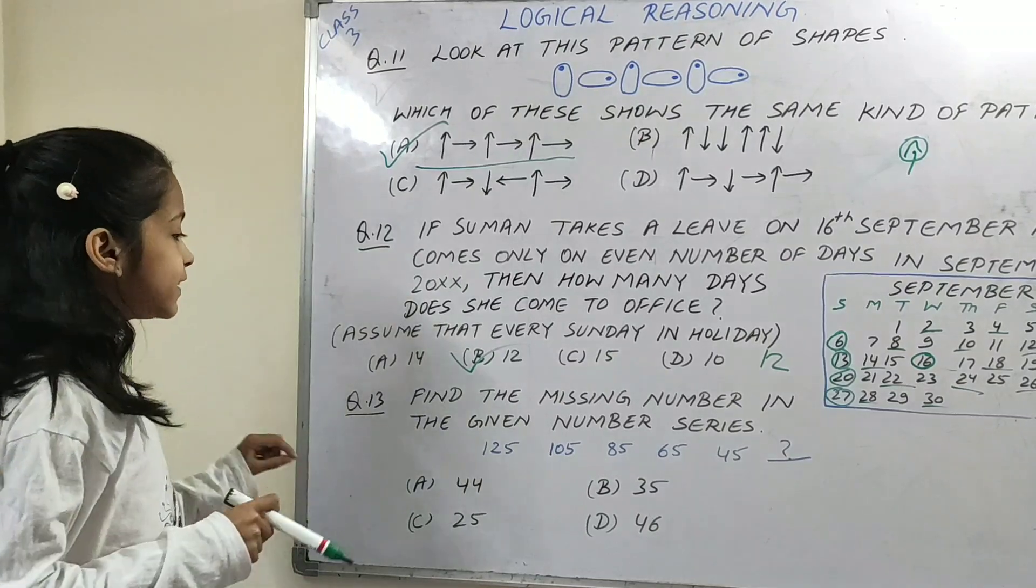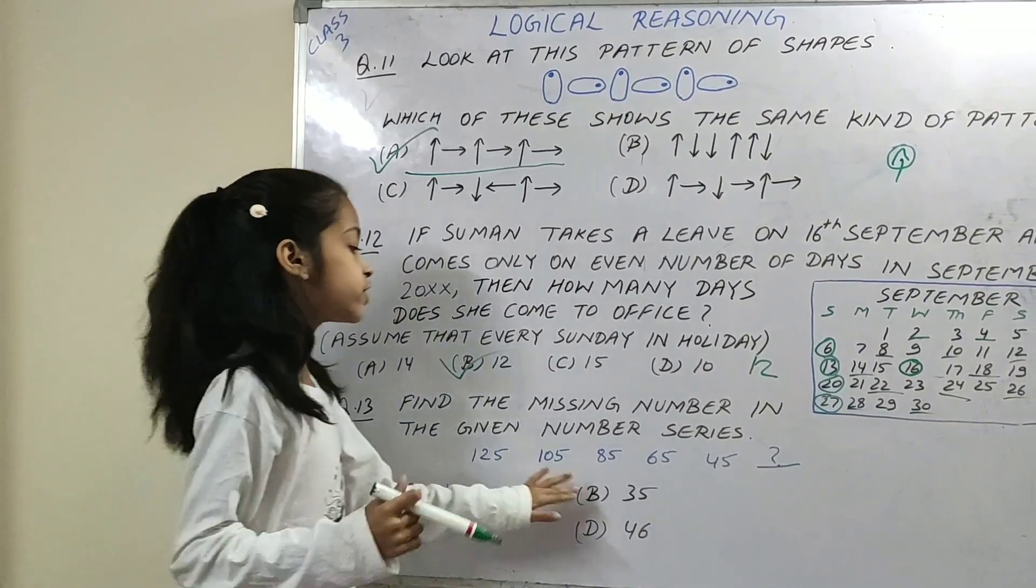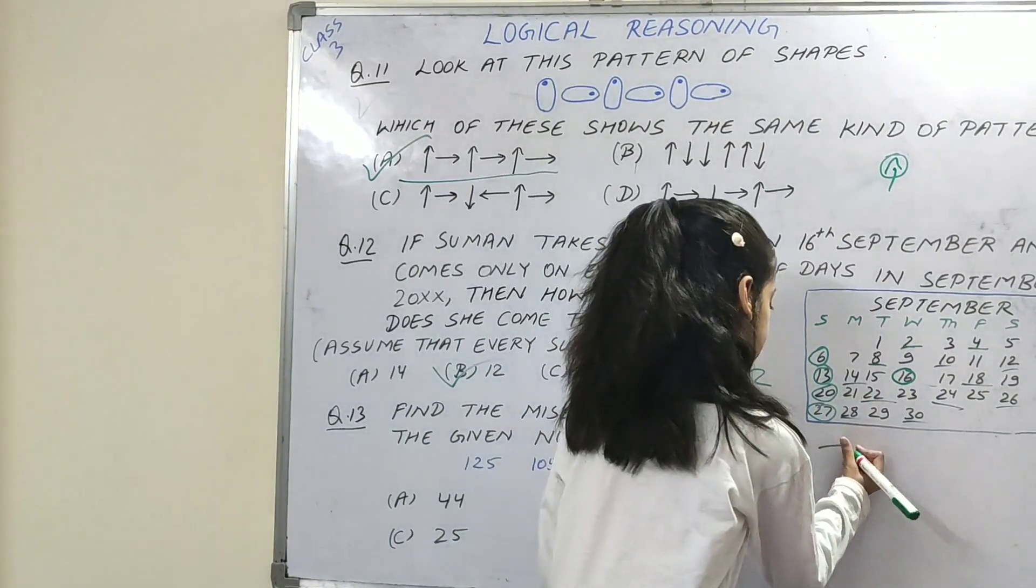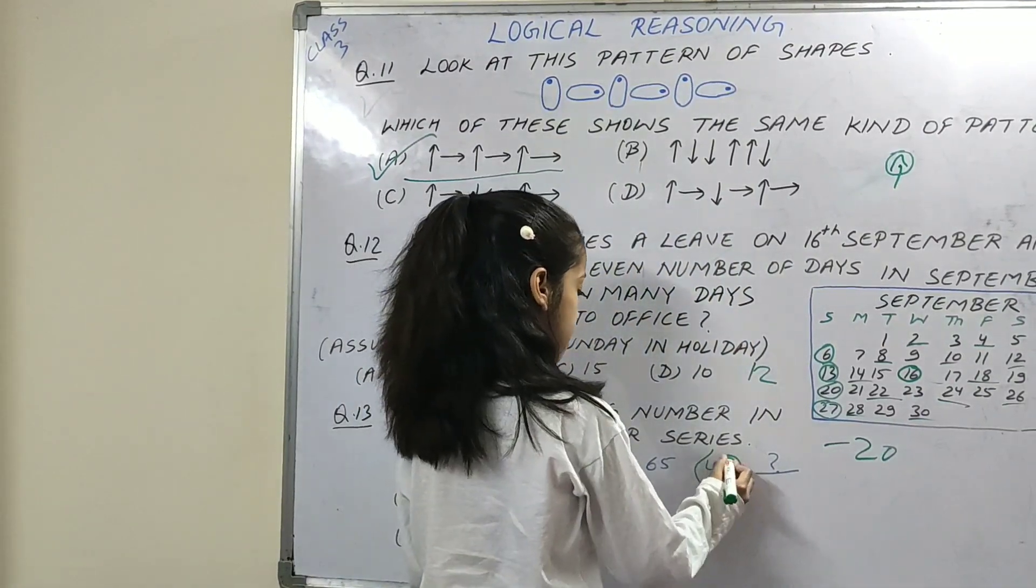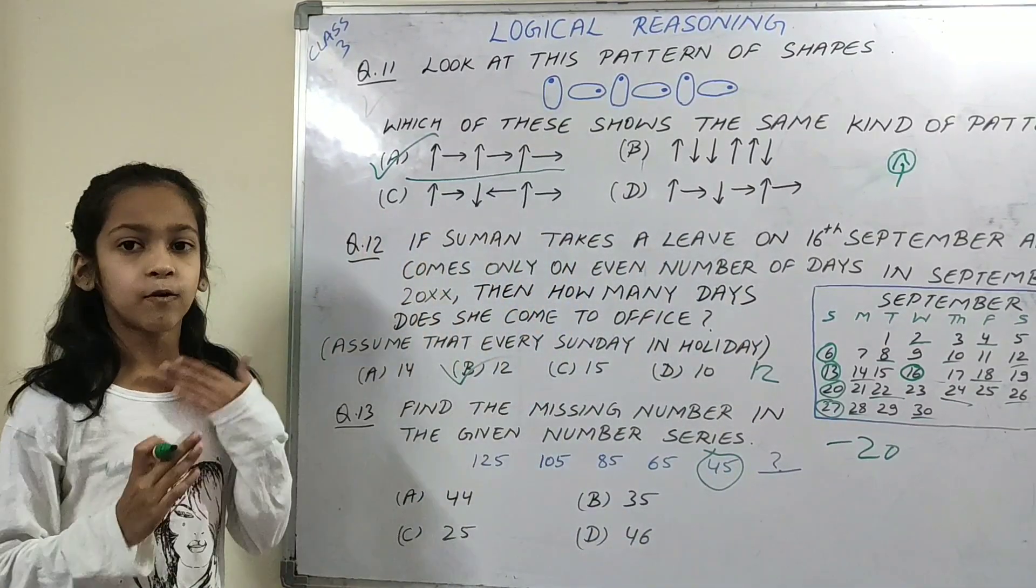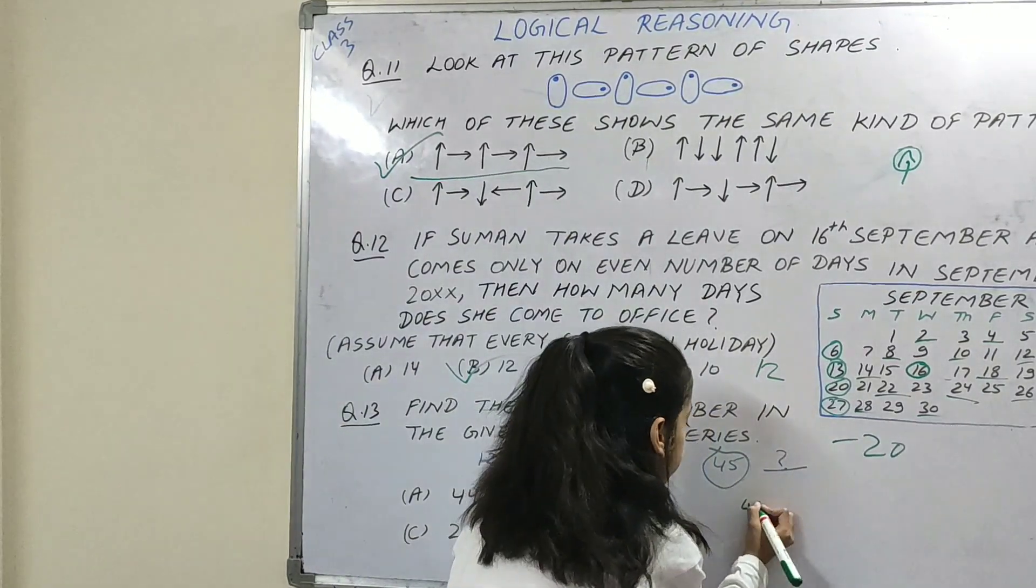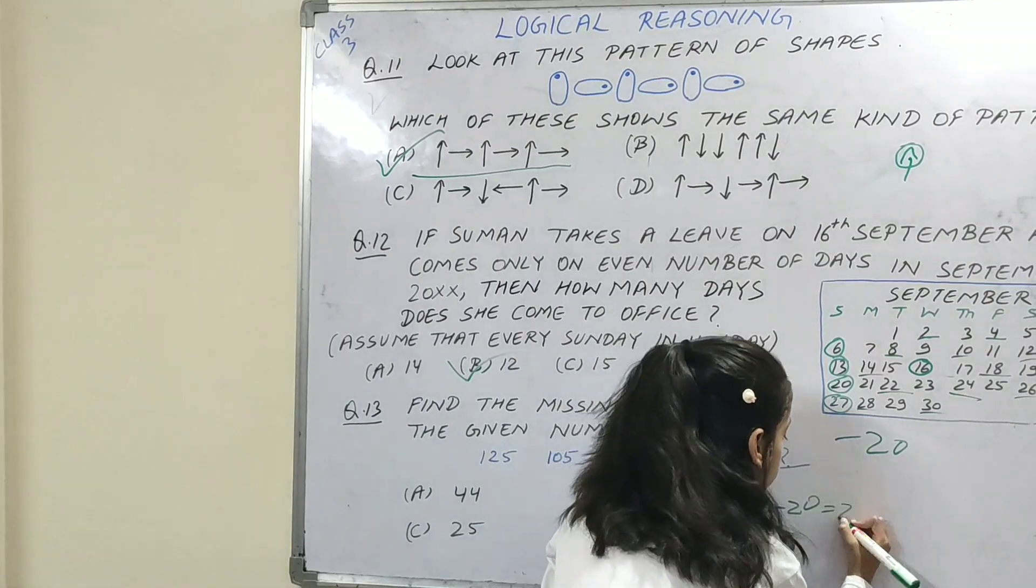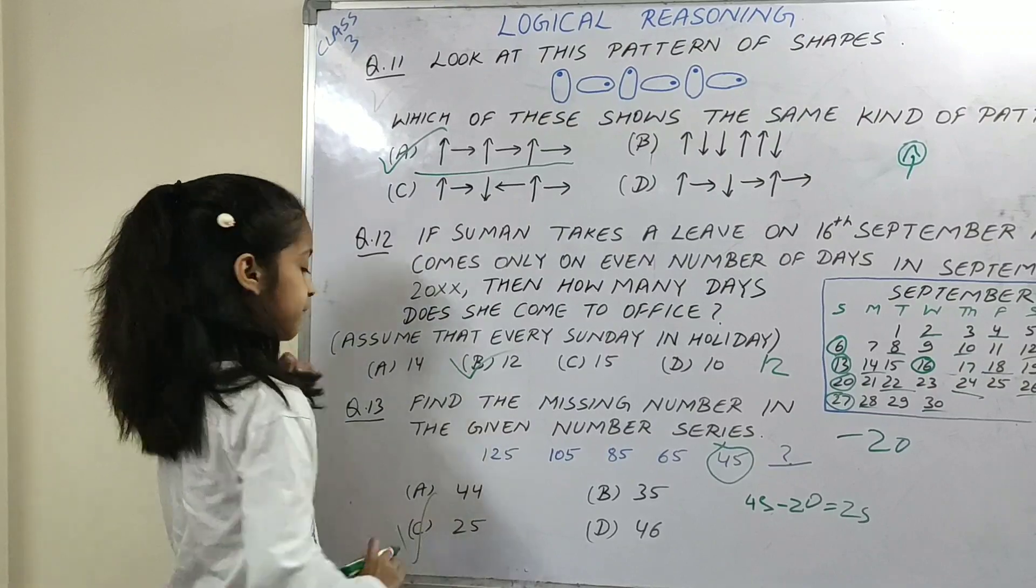Next question. Find the missing number in the given number series. This is the number series and when 20 is subtracted, we will minus 20. The last one is 45, so we will subtract 45 minus 20 which is equal to 25. The question mark is 25.